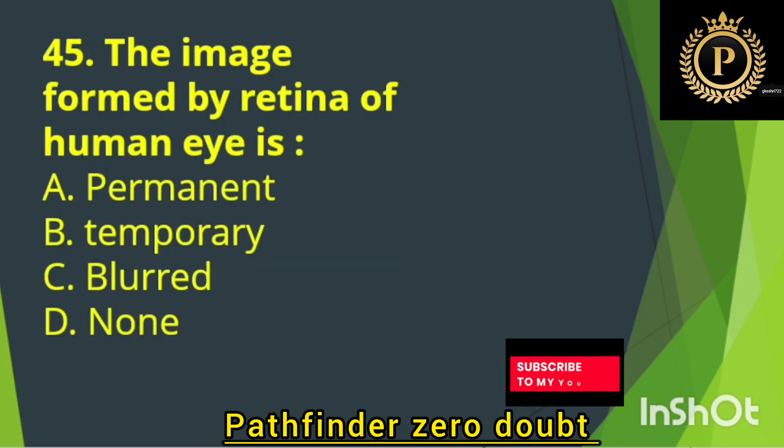The image formed by the retina of the human eye is — Option B: Temporary.